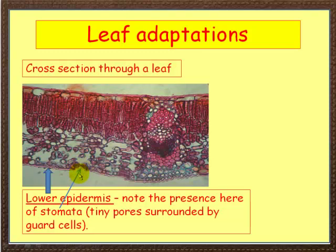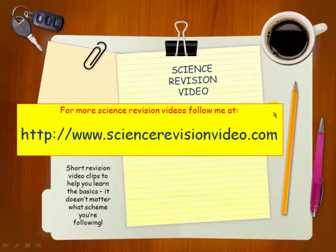So in cross-section of the leaf: waxy cuticle, palisade layer, spongy mesophyll, lower epidermis, and the stomata which allow CO2 in, oxygen out, and also allow water out. Those are the basic leaf adaptations.